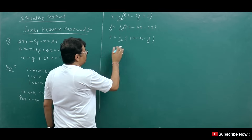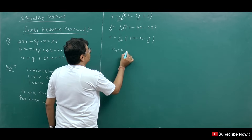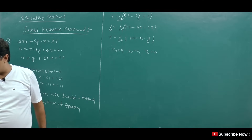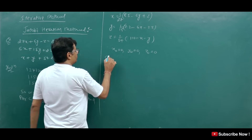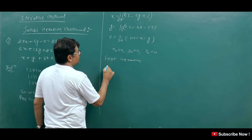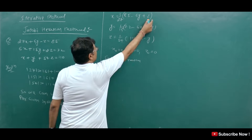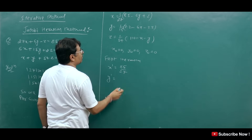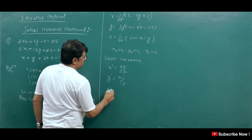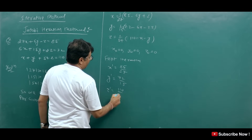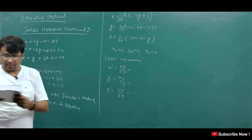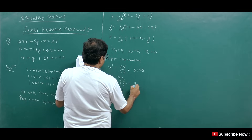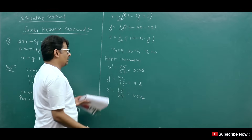What we do in the first iteration: the initial values are x₀ = 0, y₀ = 0, z₀ = 0. Substituting these into the formulas, we get x₁ = 85/27, y₁ = 72/15, z₁ = 110/54. Calculating with a calculator, the values come out as x₁ = 3.148, y₁ = 4.8, z₁ = 2.037.